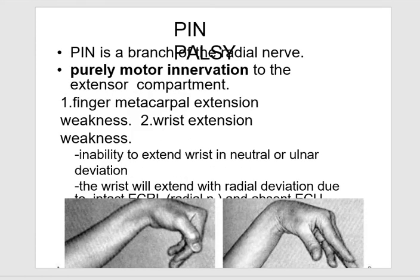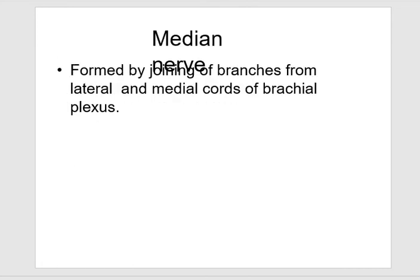The PIN (posterior interosseous nerve) is a branch of the radial nerve with purely motor innervation to the extensor compartment. It produces finger metacarpal extension weakness and wrist extension weakness.